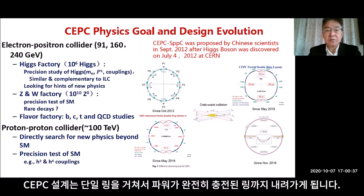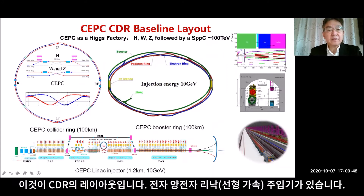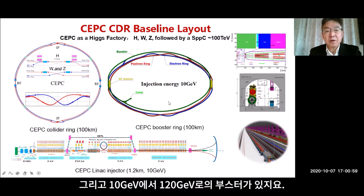The CEPC design goes through from pre-CDR single ring all the way to a fully partial double ring as a CDR. This is the CDR layout — you can see there is an injector electron-positron linac injector.